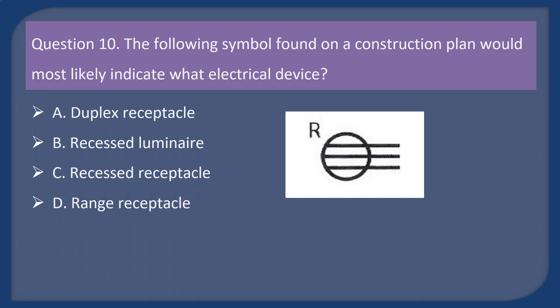Question 10. The following symbol found on a construction plan would most likely indicate what electrical device? A. Duplex receptacle. B. Recessed luminaire. C. Recessed receptacle. D. Range receptacle.